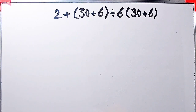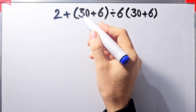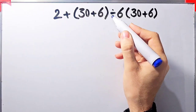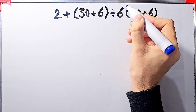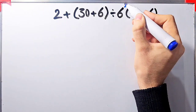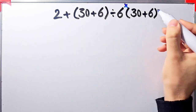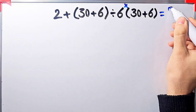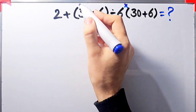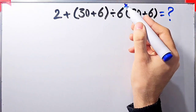Let's solve another question about the PEMDAS rule. In this question we have 2 plus open parentheses 30 plus 6 close parentheses, divided by 6, times open parentheses 30 plus 6 close parentheses. What is the answer? In this question we have addition, parentheses, division, and multiplication.